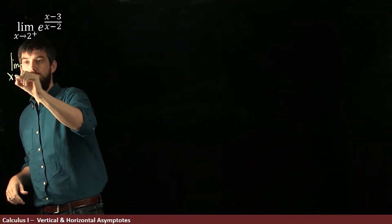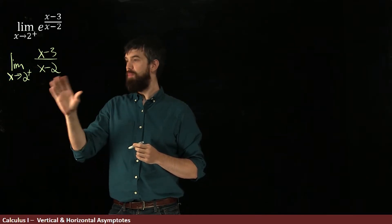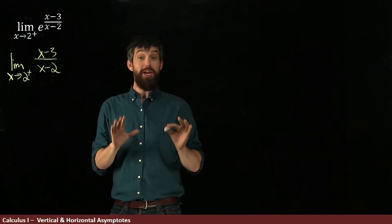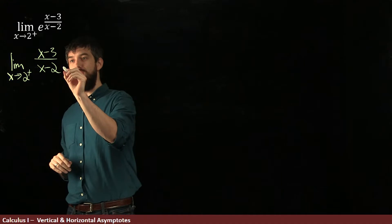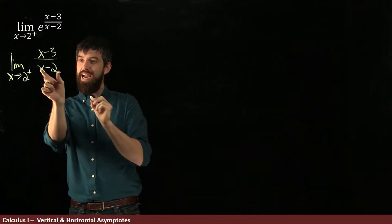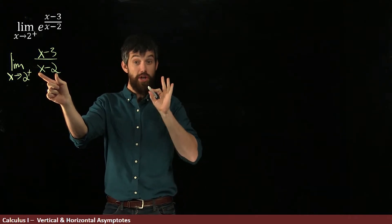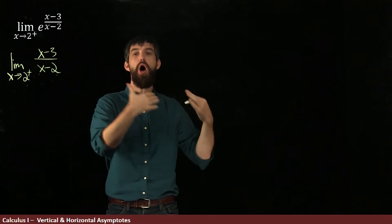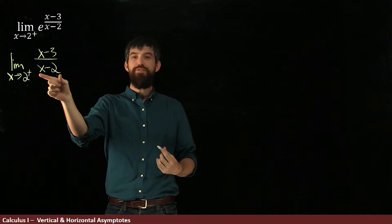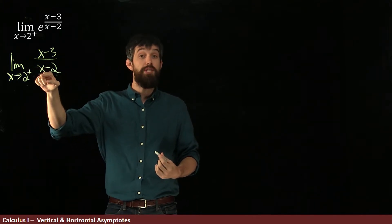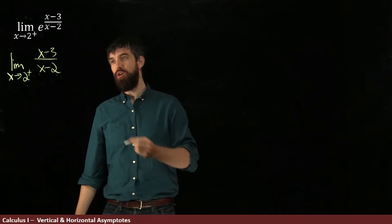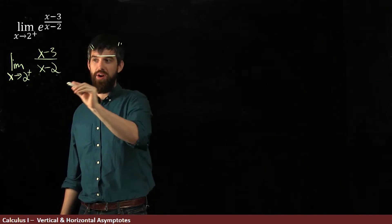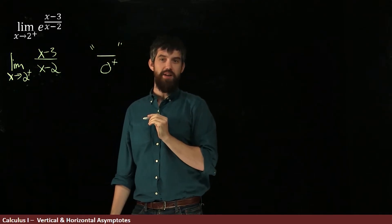I'm investigating the limit as x goes to 2 from the right of this rational function. Let's look at the denominator first. Here we have x minus 2, and I'm plugging in a value of 2. But it's not just 2 exactly — it's 2 from the right, so a value like 2.1, 2.01, 2.001. For all of those values from the right, this is going to be very close to 0, but close and positive. So the denominator looks like 0, but 0 from the right — a little bit positive.